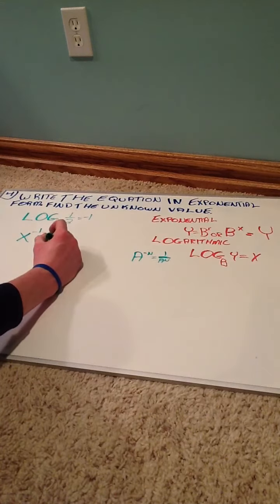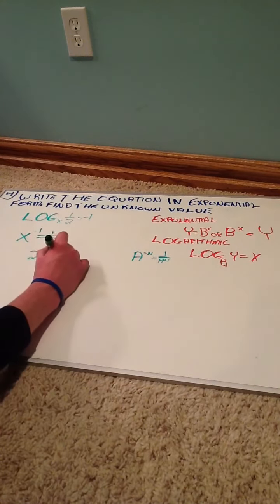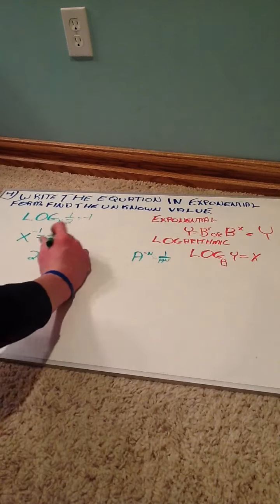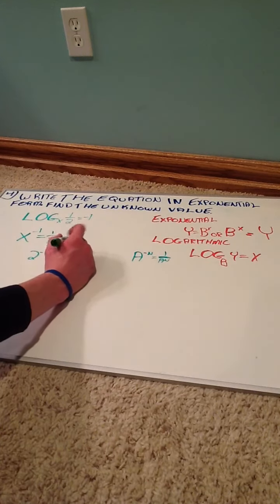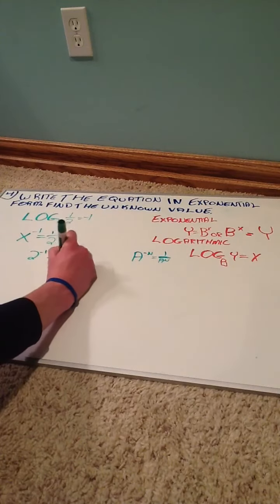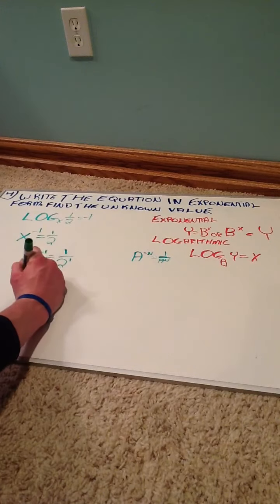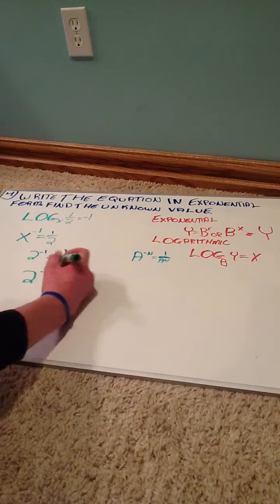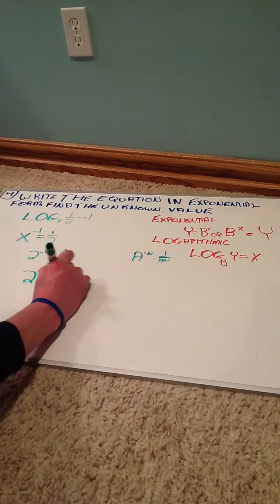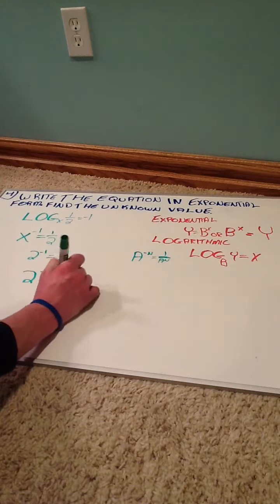So that's what was done here. Because this was to the negative first, we had x to the negative first, and what was done to make that the positive value was put one over x to the first. So that's how we come up with our answer of x to the negative one equals one-half.